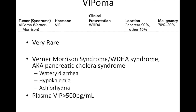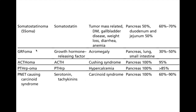VIPoma causes Werner-Morrison syndrome, with the acronym WDHA — watery diarrhea, hypokalemia, achlorhydria — diagnosed with a VIP level over 500. Other rare functional tumors include somatostatinoma, where patients get gallstones, diabetes, weight loss, and diarrhea. These generally present later with mass-related symptoms and are usually malignant. Even rarer tumors can produce growth hormone-releasing factor, ACTH, PTH-RP, and serotonin — meaning PNETs can actually cause carcinoid syndrome, which we typically don't think of as coming from the pancreas.